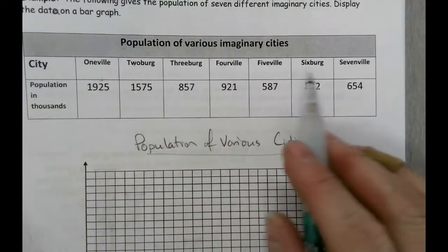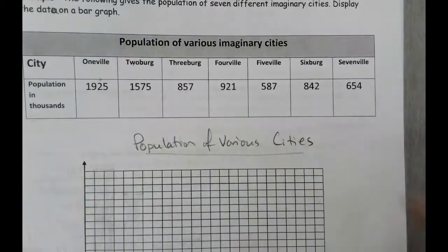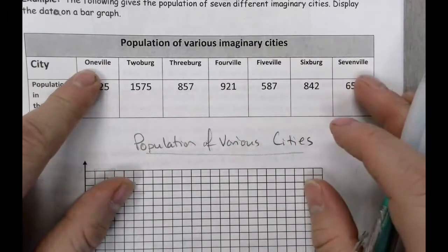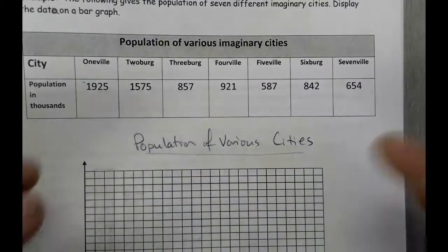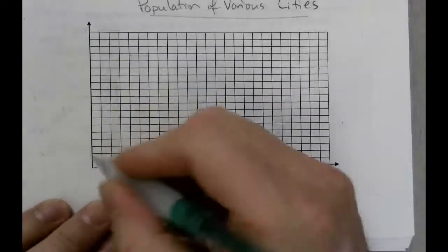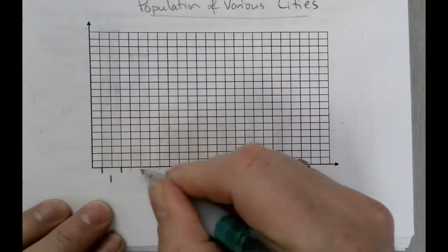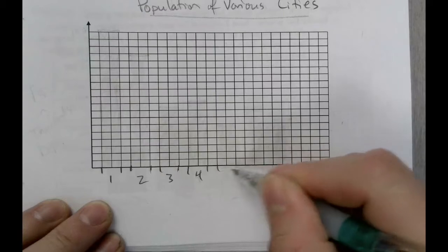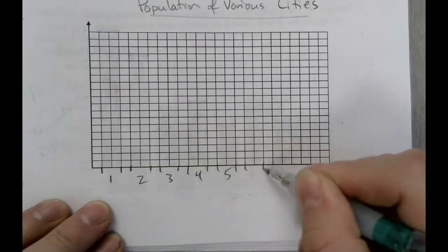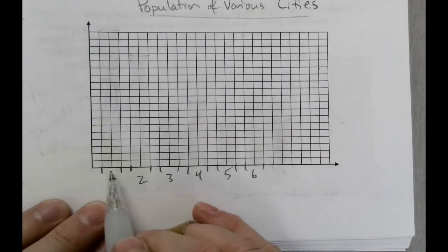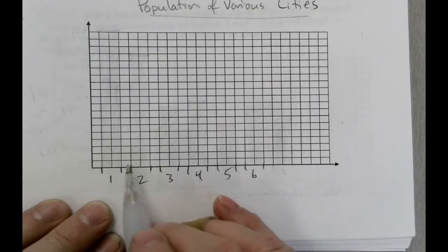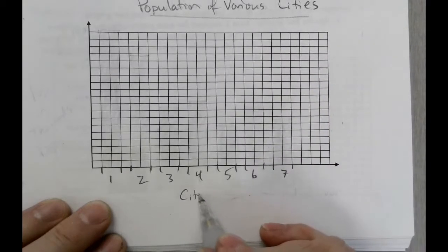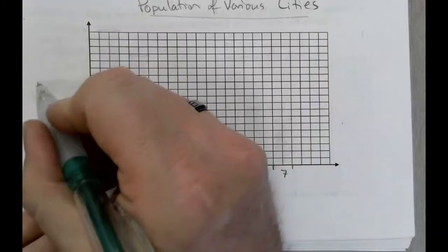Our cities are going to be One-ville, Two-ville, Three-ville, Four-ville, Five-ville, Six-ville, Seven-ville. This is the information that goes on the x-axis because the cities are the independent variable. I've given myself a two-block space for each bar and then a block space in between. Over here on the y-axis, we're going to have population.